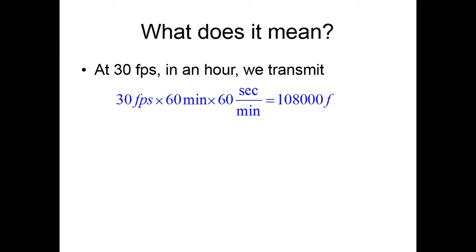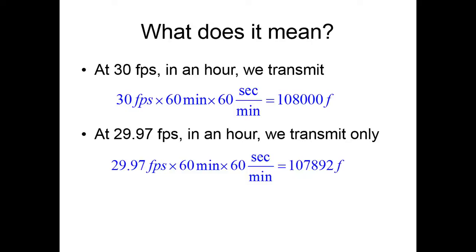What does it mean? It means that at 30 frames per second in an hour, we would transmit 108,000 frames. But now that we know we can transmit only 29.97 FPS, in an hour, we can transmit only 107,892 frames. That is, we are short by 108 frames.